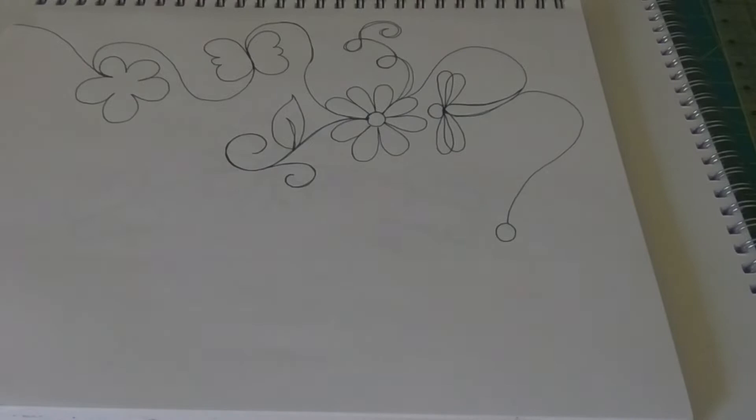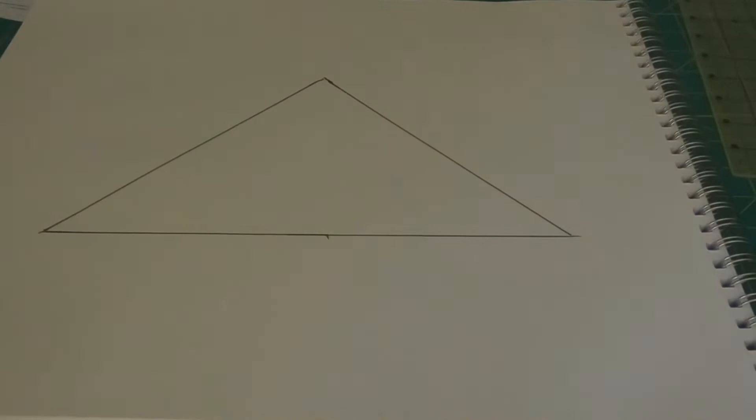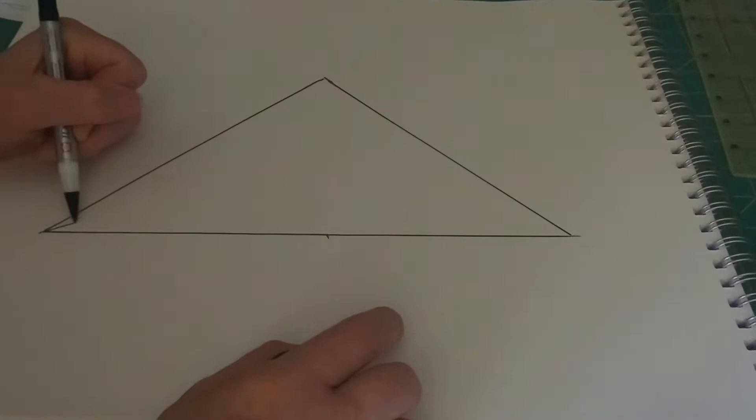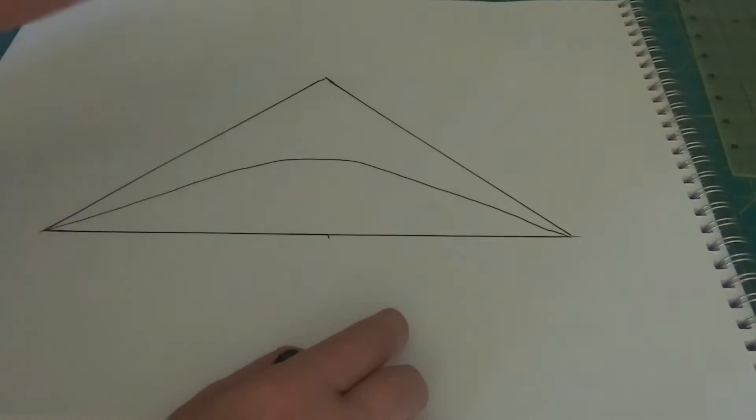One way we can use these designs, and again the possibilities are endless, is in our setting triangles. We can use them in larger flying geese open areas on our quilt. I'm not necessarily talking about the background designs yet, but here's an example of a triangle area. Beforehand, I would take a marking tool and draw an arc that's pretty uniform through my triangle.